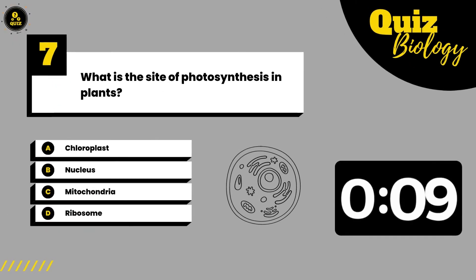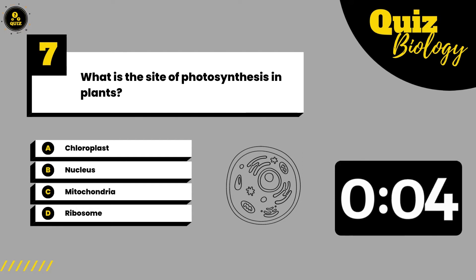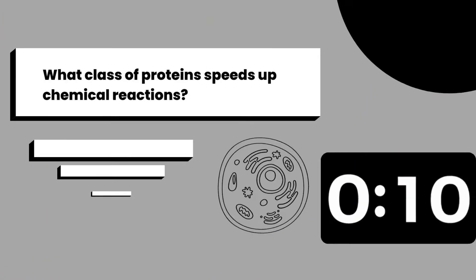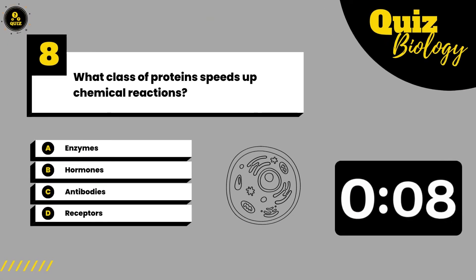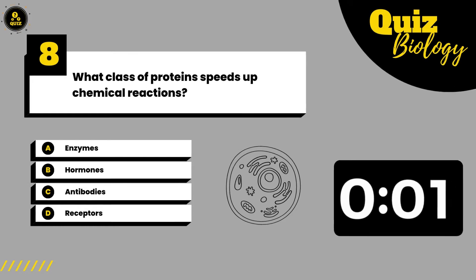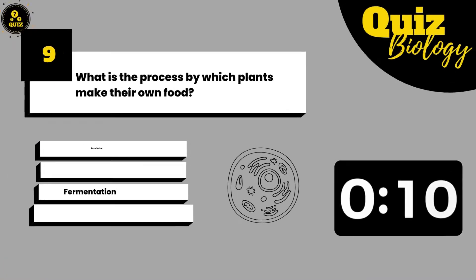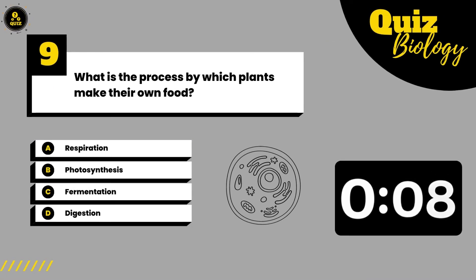What is the site of photosynthesis in plants? What class of proteins speeds up chemical reactions? What is the process by which plants make their own food?